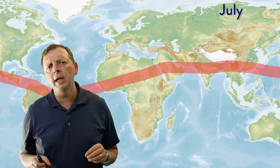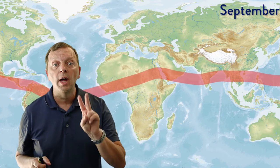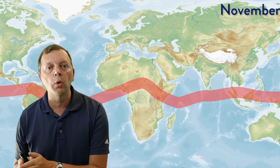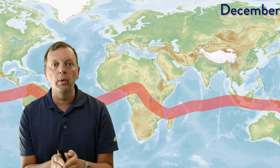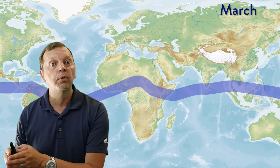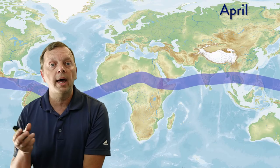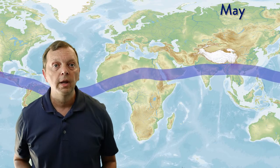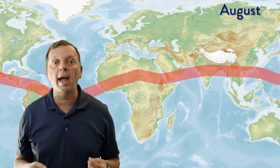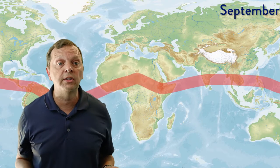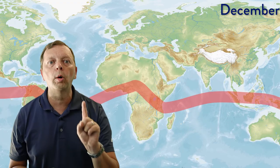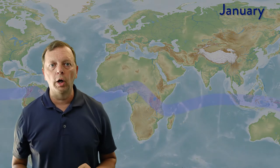The seasonal migration of the ITCZ is what gives the tropical latitudes their two seasons — their wet and their dry seasons. As the ITCZ moves over an area, it brings rainfall and creates a wet season. But when the ITCZ moves away, it takes the rains with it and that area is left with the dry season. Of course, in areas where the ITCZ does not migrate very much, such as the Congo rainforest in western Africa, there is no real dry season — instead, these regions have one warm rainy season all year long.